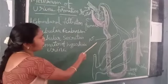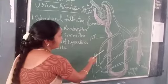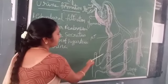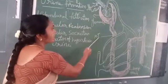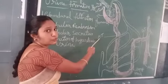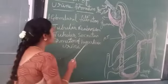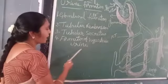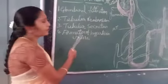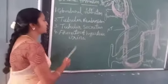Small amount of tubular secretion takes place in the proximal convoluted tubule. Next, formation of hypotonic urine.